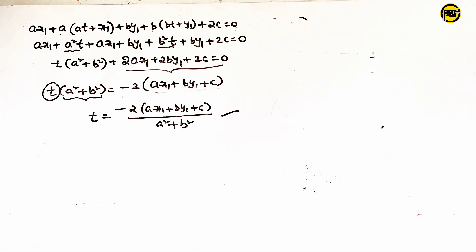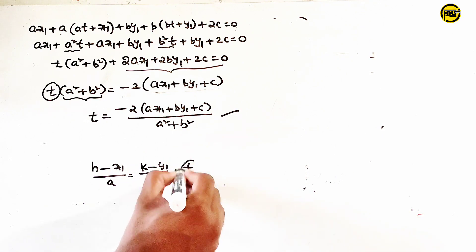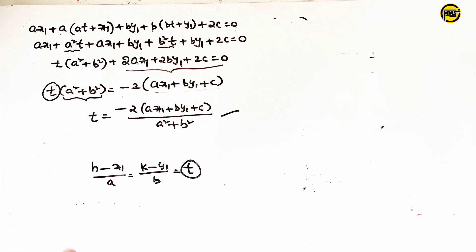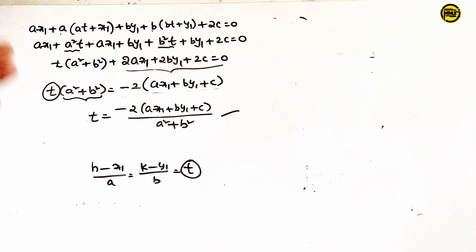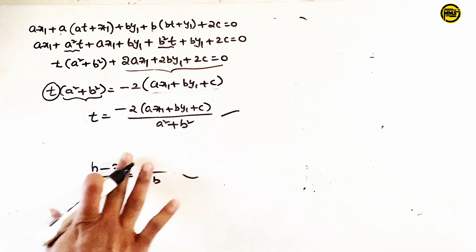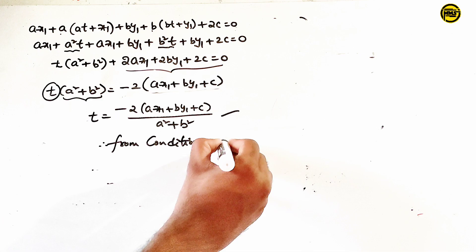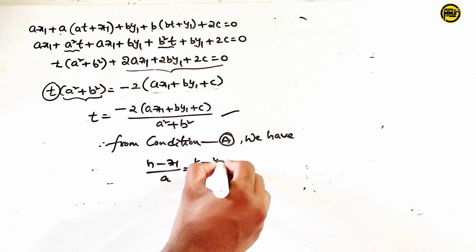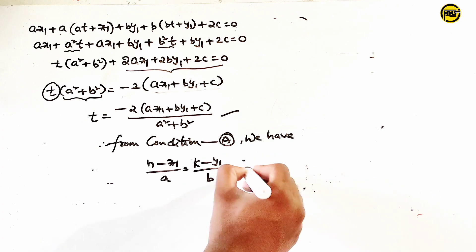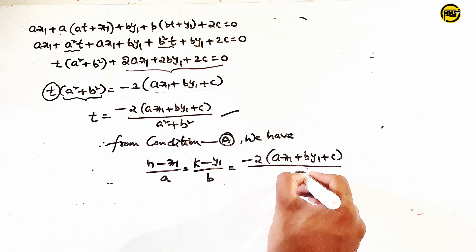Therefore t into a squared plus b squared equals minus 2 into ax1 plus by1 plus c. So t equals minus 2 into ax1 plus by1 plus c, divided by a squared plus b squared. This is the final t value. Therefore the complete condition is: h minus x1 by a equals k minus y1 by b equals minus 2 times ax1 plus by1 plus c, all divided by a squared plus b squared.